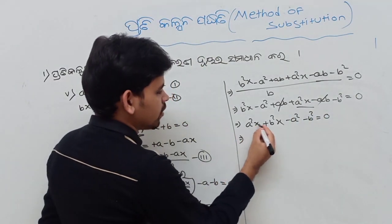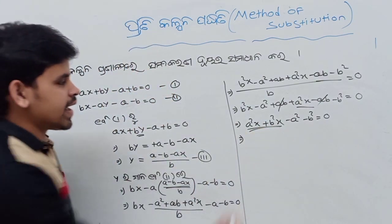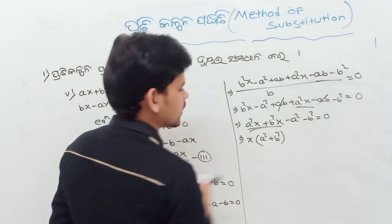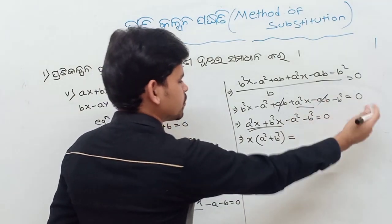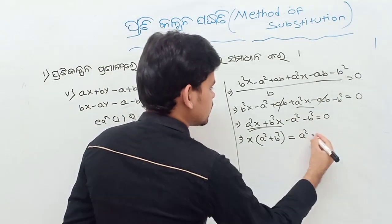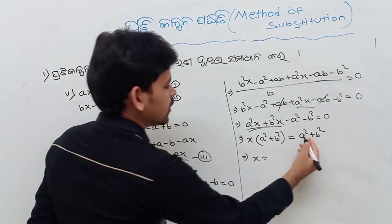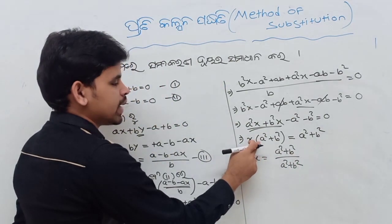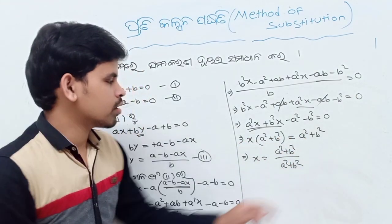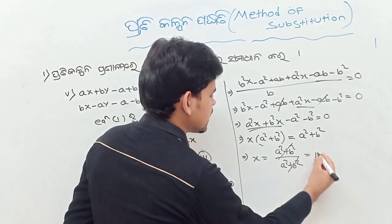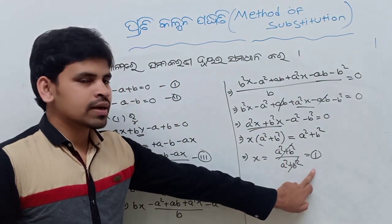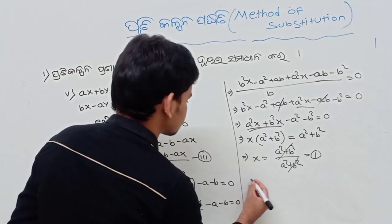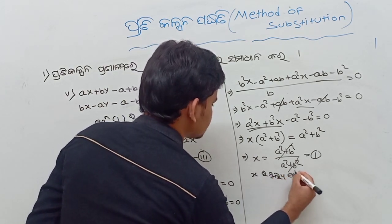So next one, it is a common factor — X is common. Then A squared plus B squared. So equal to minus A squared plus B squared. Then next X equal to B squared by A squared plus B squared.